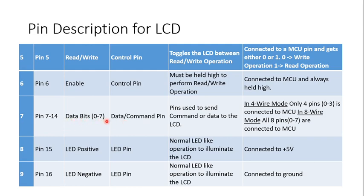Data bits 0 to 7 are used to send commands or data to the LCD. You can use it in eight-wire mode, where all eight pins are used to connect the microcontroller. But in some cases you can use four-wire mode also, where you can save the number of pins. We will discuss four-wire mode afterwards. Pin number 15 is LED positive — it should be connected to plus 5 volts. Pin number 16 is LED negative — it should be connected to ground. So to illuminate the LCD, connect pin 15 to VCC and pin 16 to ground. This completes the pin description for the LCD.